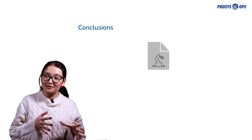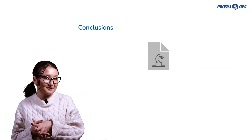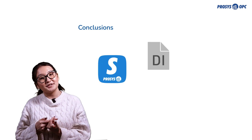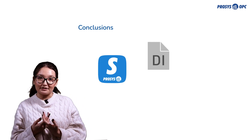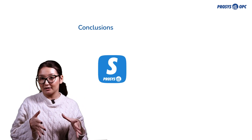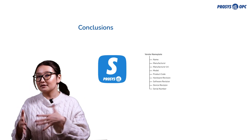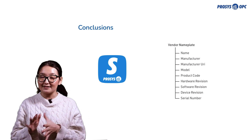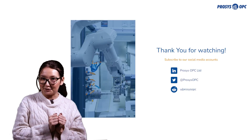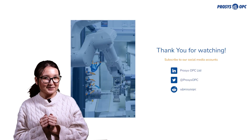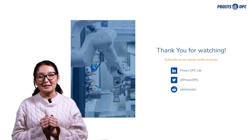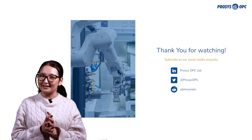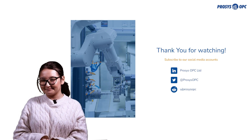You may test information models and companion specifications by using our ProcessOPC UA simulation server. Additionally, we will also link the companion specifications in the description box below. Thank you for watching our videos. Subscribe to our channel, click the bell button, and leave your comments below.